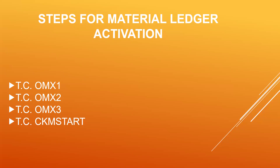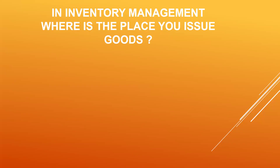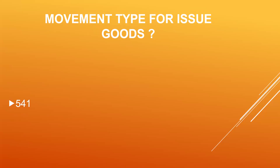What is scheduling — just in time? A link has been provided in the description with a complete interview questions and answers. Next: in inventory management, where is the place for goods issue? This is a twisting question — you issue goods to a subcontracting vendor, the vendor uses the material. The movement type for goods issue to subcontracting vendor is 541. A complete subcontracting process guide has been given in the description — check the link. These are all the questions. Thank you.